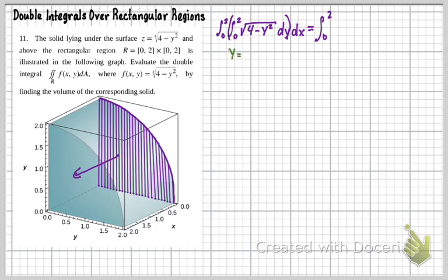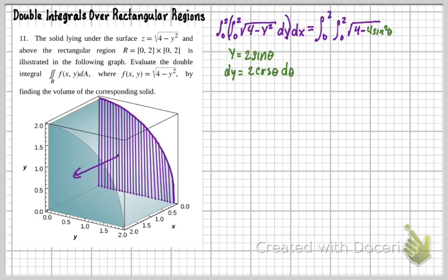So y equals 2 sine theta, and then dy equals 2 cosine theta d theta. Now we can do our substitution. We still have the integral from 0 to 2, the square root of 4 minus 4 sine squared theta, times 2 cosine theta d theta — and that's multiplied by dx for the outer integral.